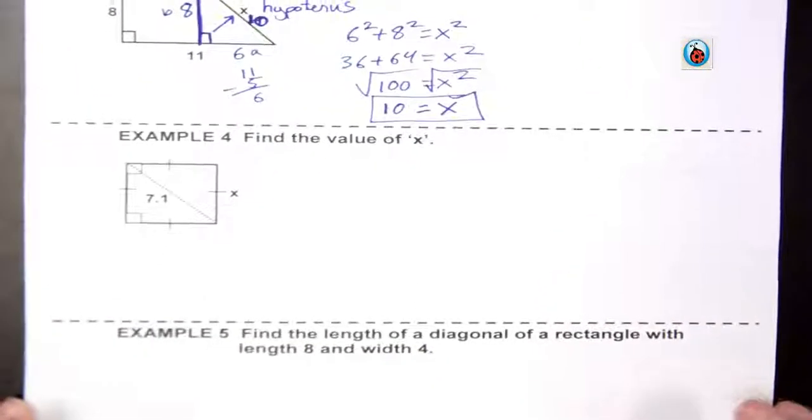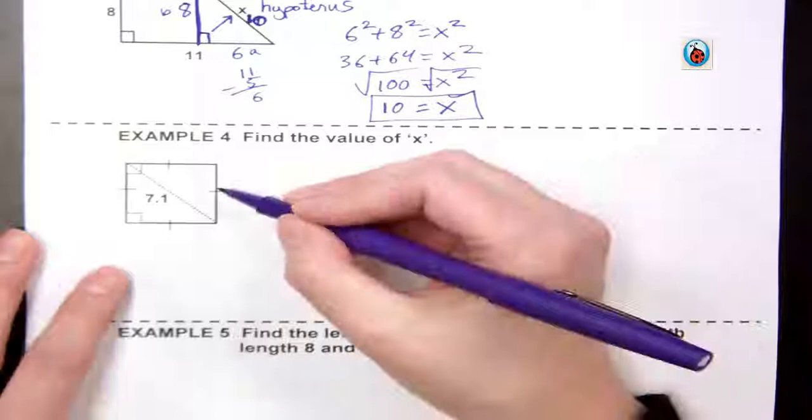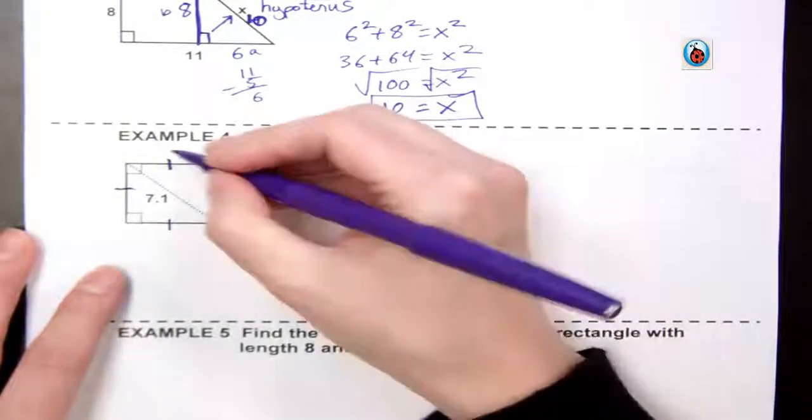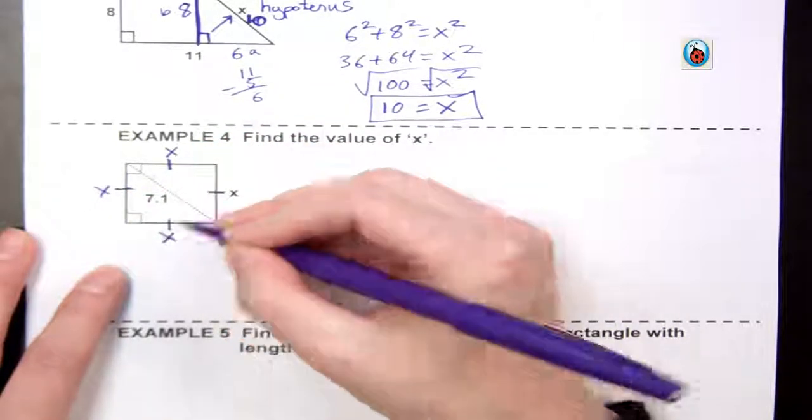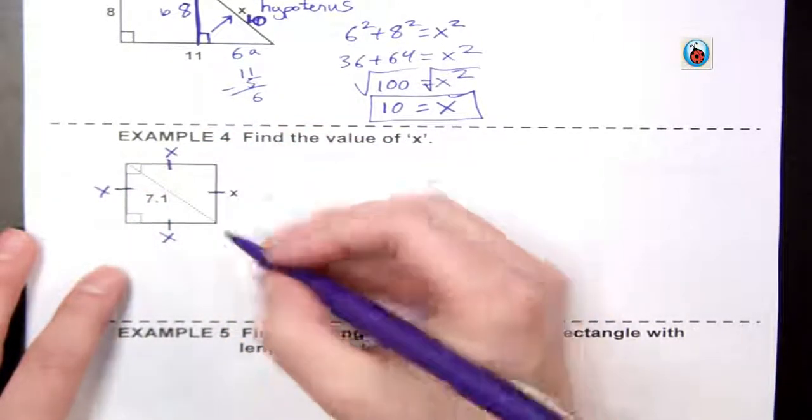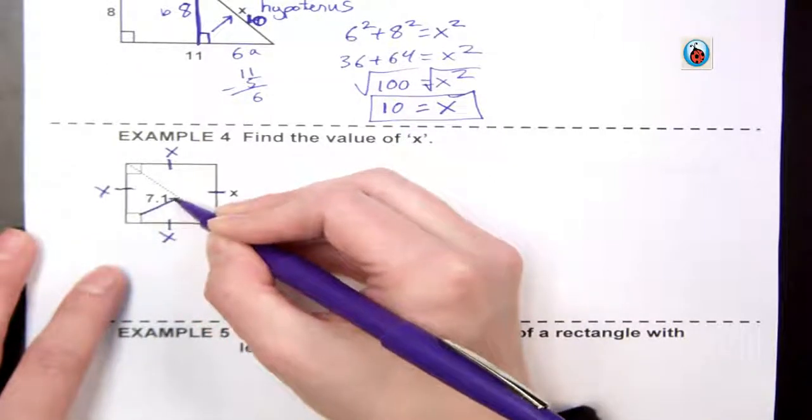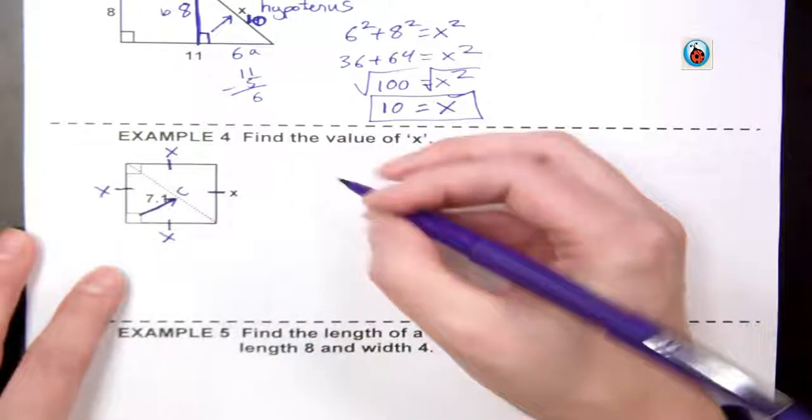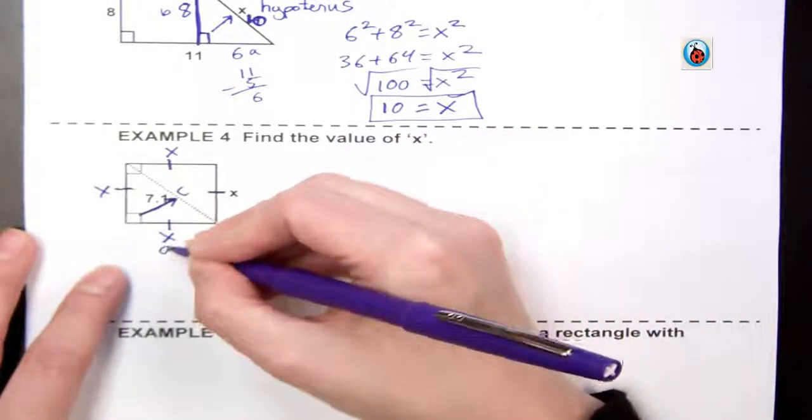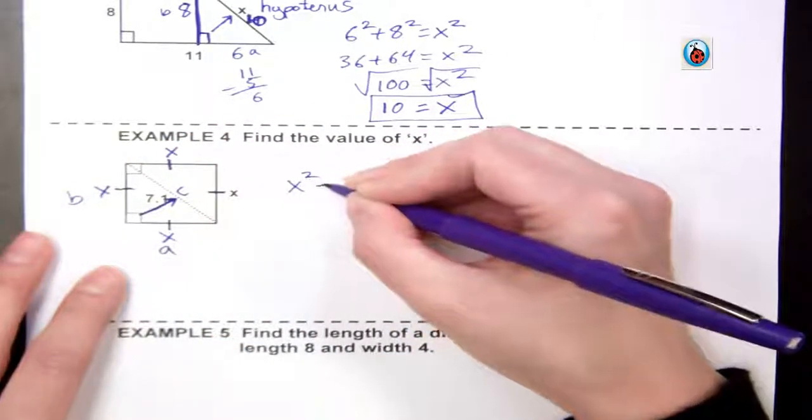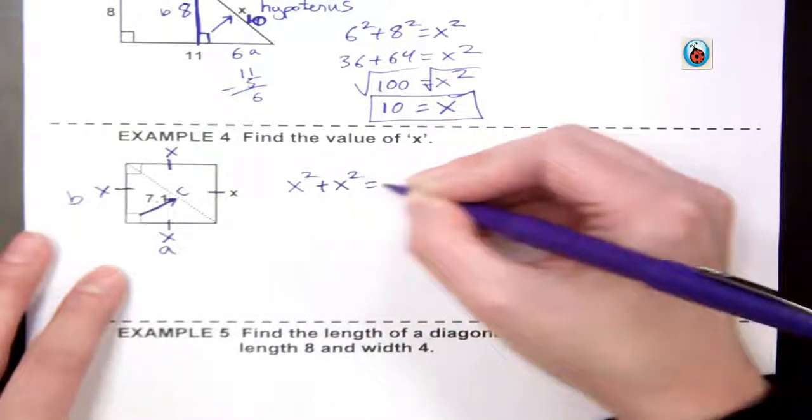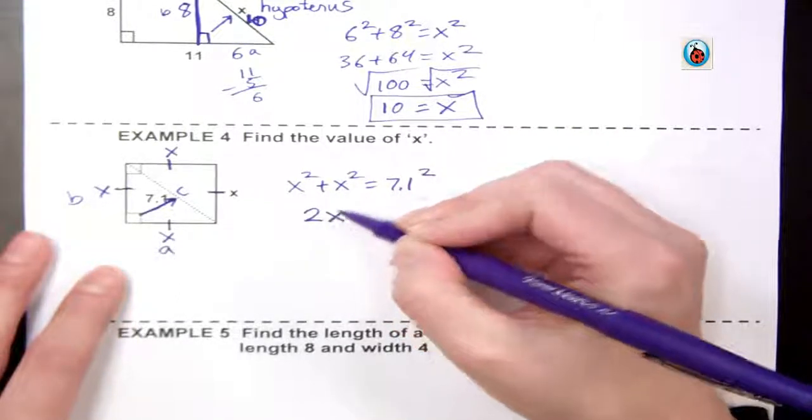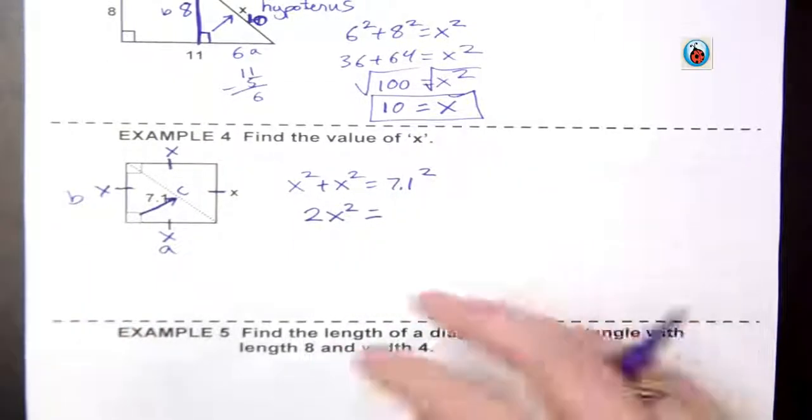On our next example, we have these lines that, if you remember, mean everything is exactly the same. So I can label every single side x. My diagonal is 7.1. The diagonal is across from that square root symbol, so therefore it's our hypotenuse. My x is my a and my b. So I have x squared plus x squared equals 7.1 squared. That gives me 2x squared, because I just add the like terms.